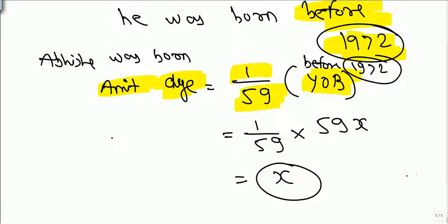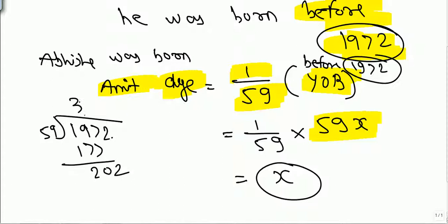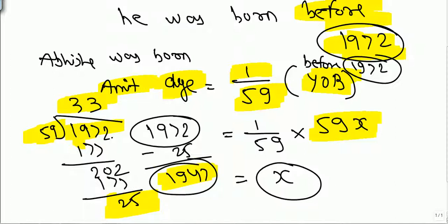The simple logic is: Amitabh's year of birth has to be a multiple of 59. Only then will Amitabh's age come out as an integer value, and Abhishek's year of birth will also be an integer. So Amitabh's year of birth must be a multiple of 59 and before 1972. Before 1972, the multiple of 59 — 59 times 33 is 1947 — so this is one possible answer.